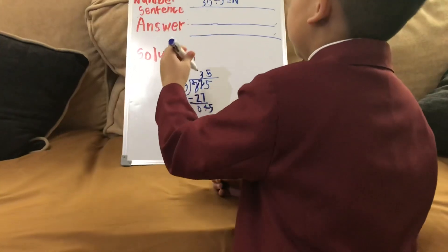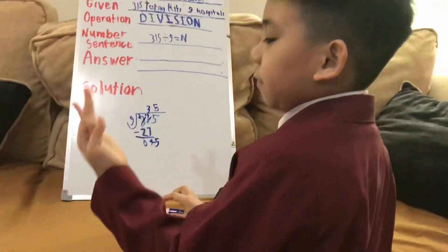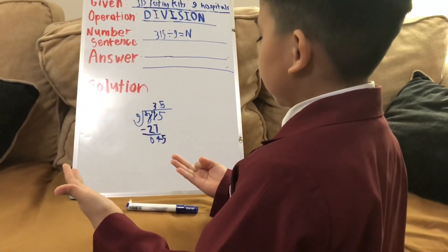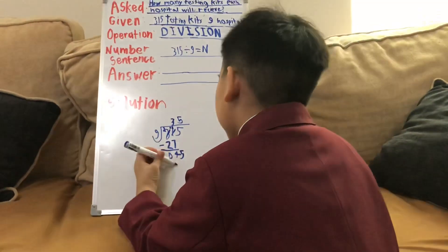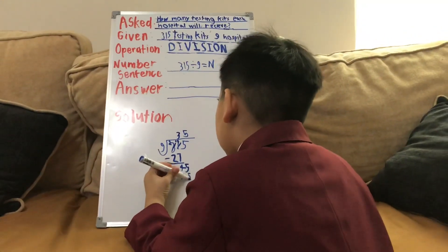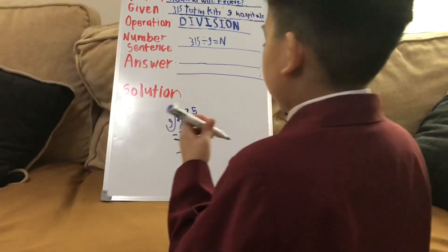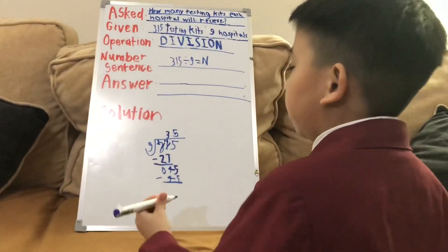And now, we have to times 9 times 5. So, 5, 10, 15, 20, 25, 30, 35, 40, 45. So, 45 is over here. Now, we have 45 minus 45. Now, it's going to be 0.